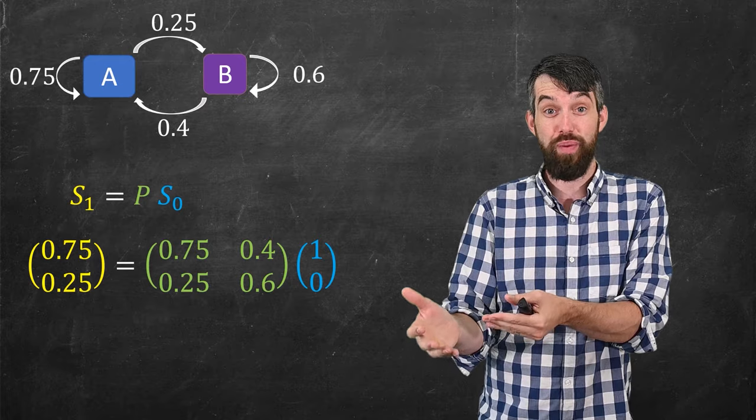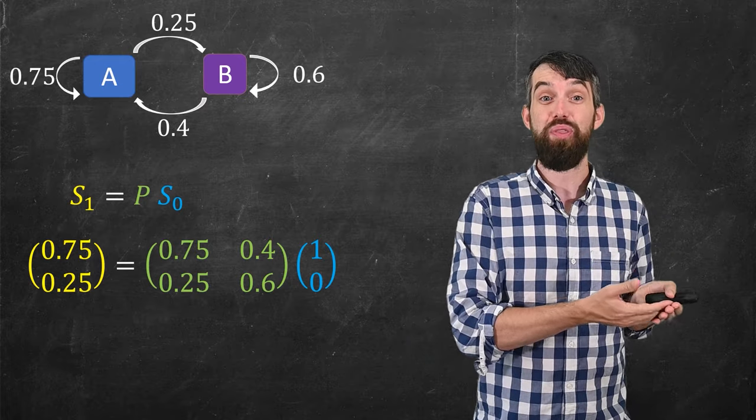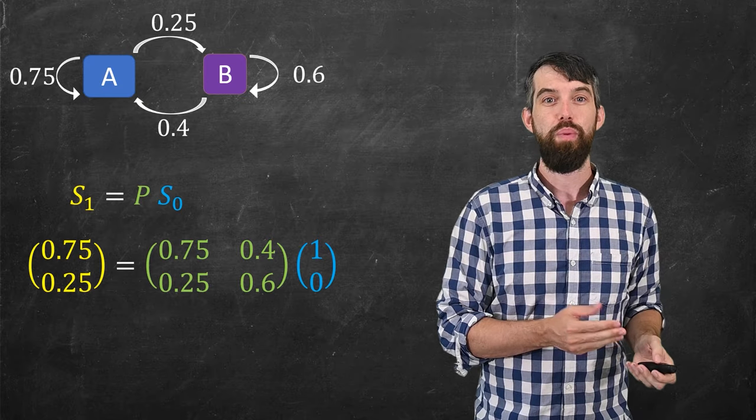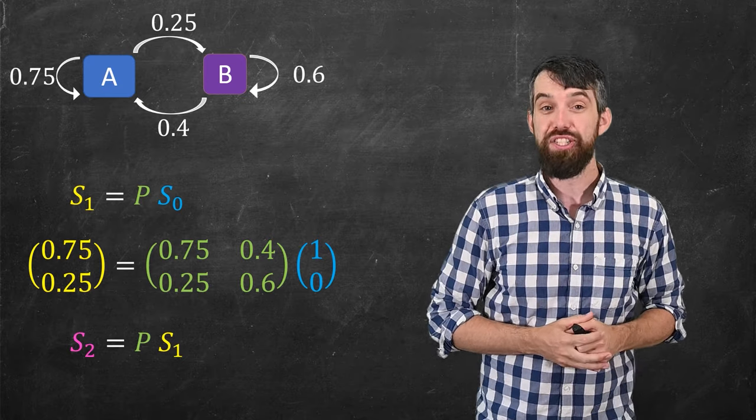Now, thus far, we haven't really gotten a big improvement because you were capable of coming up with the S1 just by looking at the diagram. We didn't need to do all this formalism. But what about going towards S2?